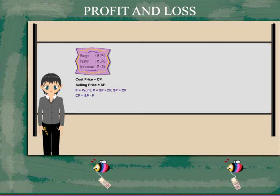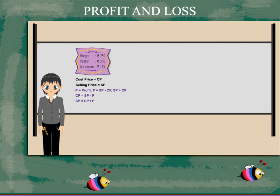If you subtract the profit from the SP, you get the CP, and if you add the profit to the CP, you will get the SP.